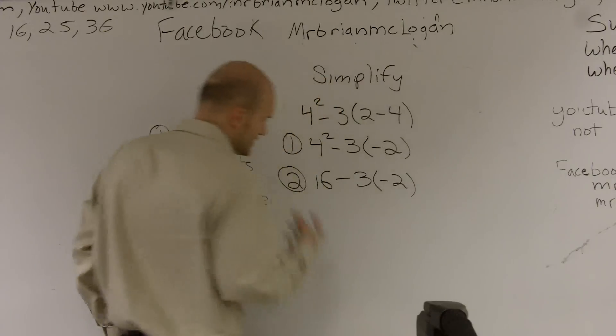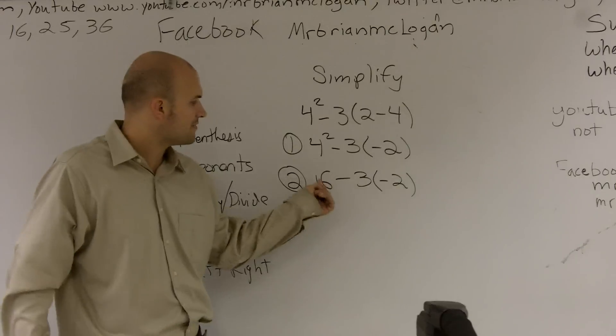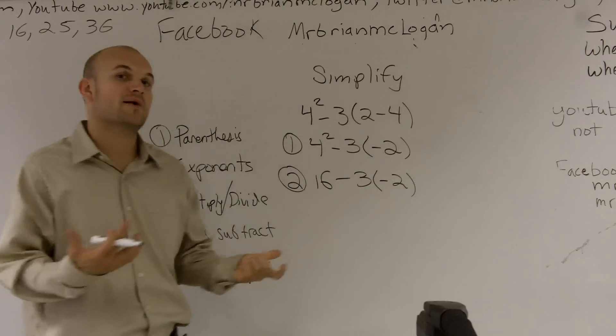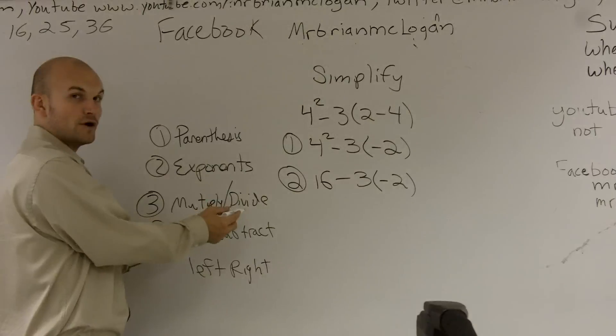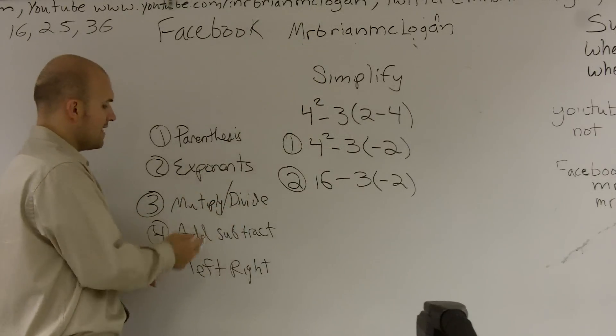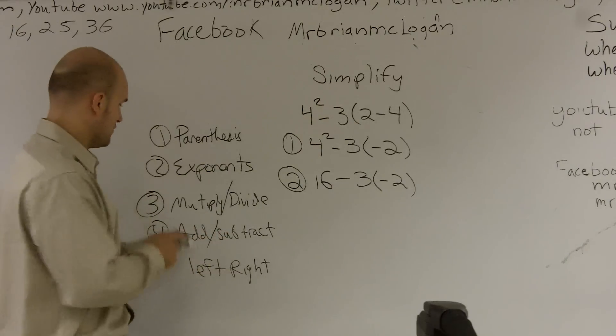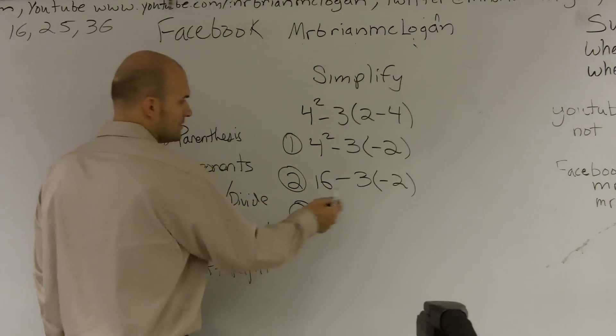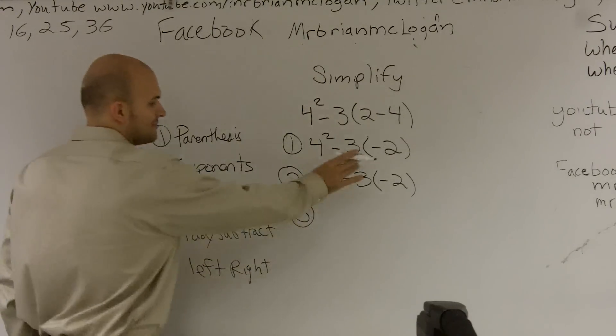So what students usually get in their head, they say, oh, always work left to right. So they want to say 16 minus 3 times negative 2. Well, the problem is you're violating these steps. You always have to do multiply divide first, then left to right, and then add subtract, then left to right. So for step number 3, I have to do multiplication. Even though this subtraction is farther left, it would be what I'd first read, you have to make sure you're doing your multiplication.